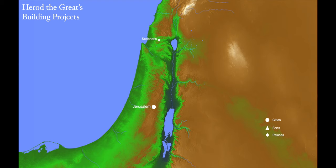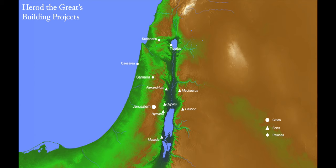He also paid for the building of Sepphoris, a city in Galilee, Tiberias along the Sea of Galilee, and Caesarea, a major port along the Mediterranean Sea. He also did major projects in the city of Samaria — four major urban centers that would have brought jobs and wealth to those regions. He also strengthened Israel by building a number of forts: Masada, Machaerus, Hyrcania, Cyprus, Alexandria. He also built three palaces near Jericho and one south of Jerusalem, Herodium.